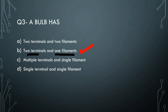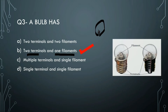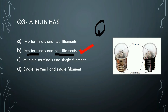What is a filament? A bulb's filament is a thin wire inside the bulb - it is called a filament. The bulb has a filament and two terminals: one plus and one minus.